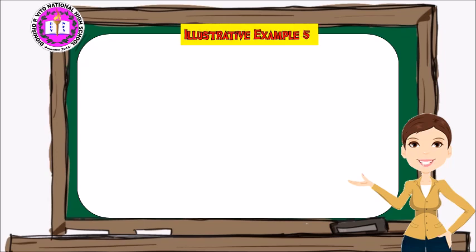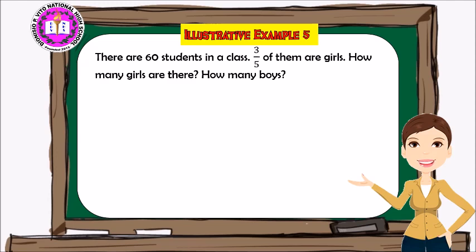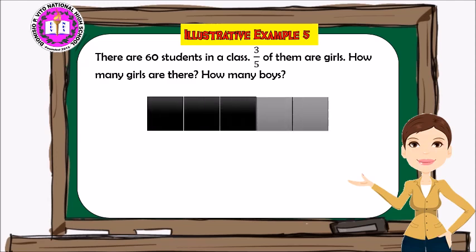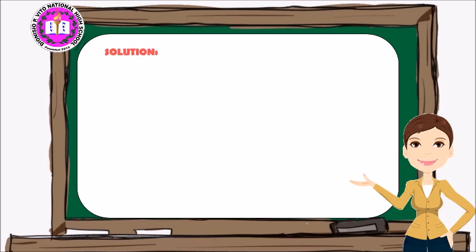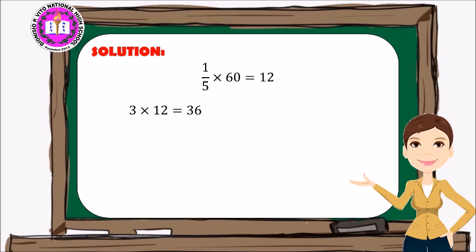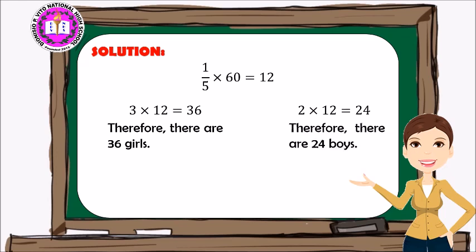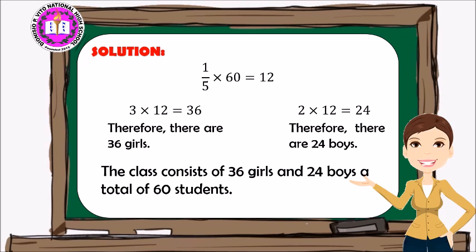Illustrative Example 5: there are 60 students in a class; three-fifths of them are girls. How many girls and how many boys are there? Since three-fifths are girls, two-fifths are boys. Solution: one-fifth times 60 equals 12; three times 12 equals 36, so there are 36 girls. Two times 12 equals 24, so there are 24 boys. The class consists of 36 girls and 24 boys, for a total of 60 students.